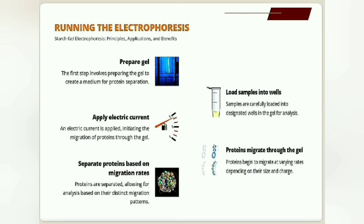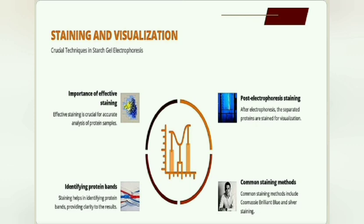The applied sample accumulates on the separating gel, where the molecules are separated according to their size due to the smaller pore size of the gel. After electrophoresis, the gel is removed and the zones are identified by staining.